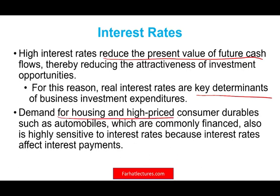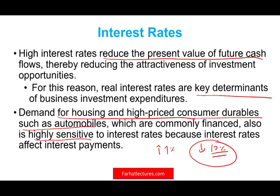Demand for housing and high-priced consumer durables like automobiles, which are commonly financed, are also sensitive to interest rates because rates affect interest payments. There's a rule in real estate: every time the interest rate increases by 1%, home prices or demand goes down by 10%. From a macro perspective, when 10% fewer people are buying homes, there is 10% less home selling — people are not buying TVs, refrigerators, furniture, or computers. As interest rates go up, everything costs more, you spend less, and investment becomes riskier.